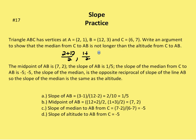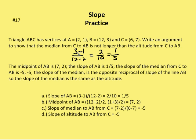Now we find the slope of AB. Taking the change in y over the change in x: 3 minus 1 over 12 minus 2 gives us 2 over 10, so the slope of AB is one-fifth. Now I find the slope of the median to AB, which goes from vertex C at (6, 7) to midpoint (7, 2). The slope is 7 minus 2 over 6 minus 7, which is 5 over negative 1, so the slope of the median is negative 5.